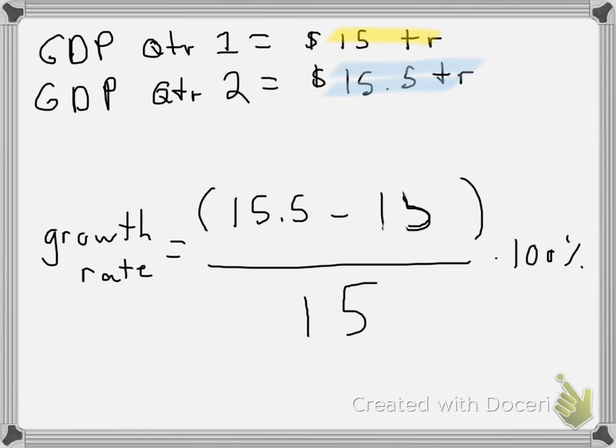So we've got 15.5 minus 15 divided by 15 times 100. We know that this is 0.5, and that would be 0.5 divided by 15 or 0.0333 times 100%, and that would equal out to be 3.33%.